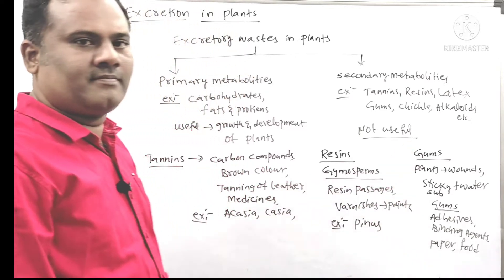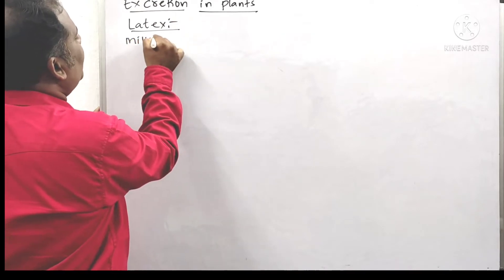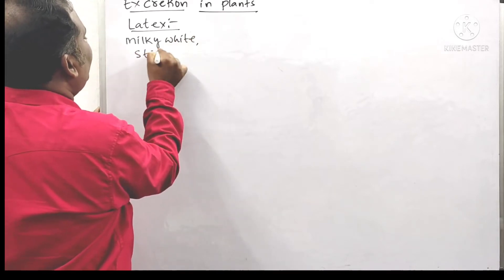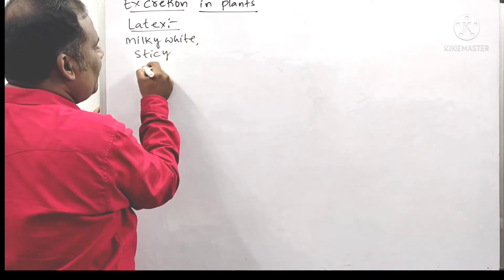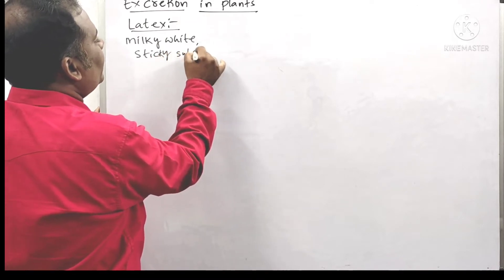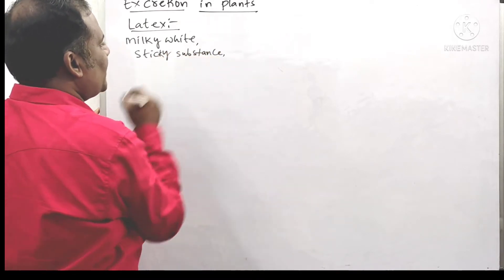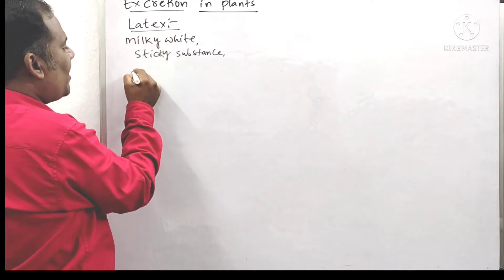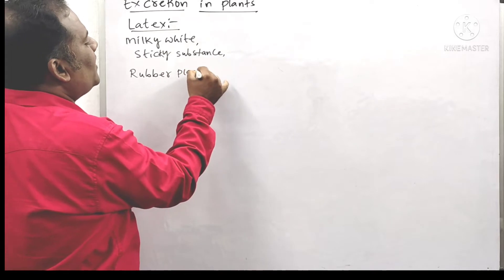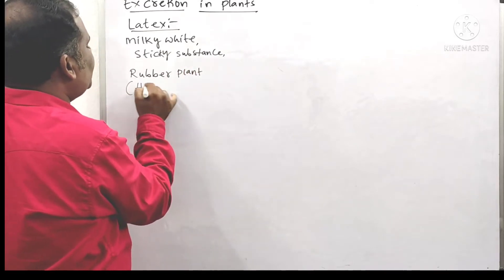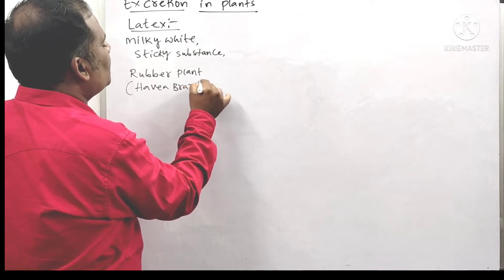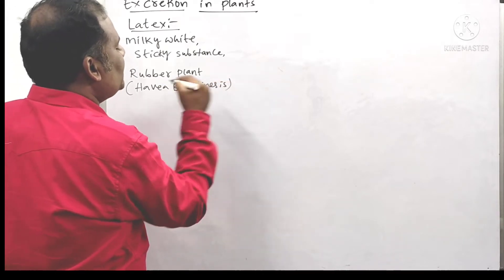Next is latex — a milky white, sticky substance. It is produced from the rubber plant. The rubber plant's scientific name is Hevea brasiliensis. From this rubber plant, latex is collected and it is useful in the production of rubber — making tubes, tires, and so on.